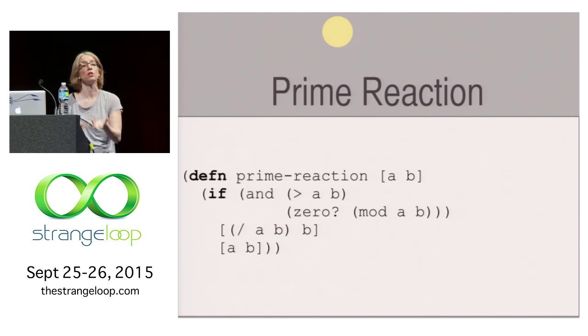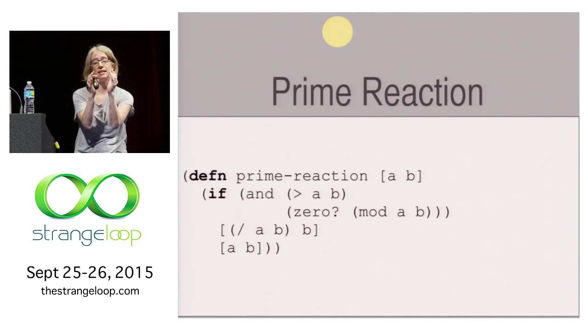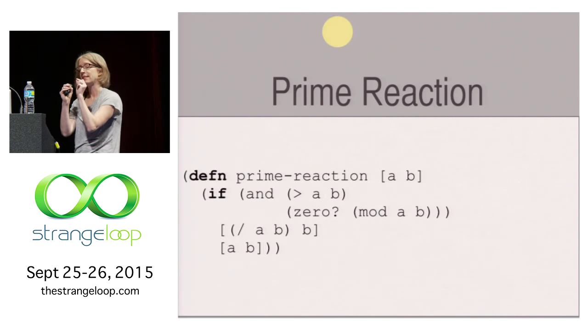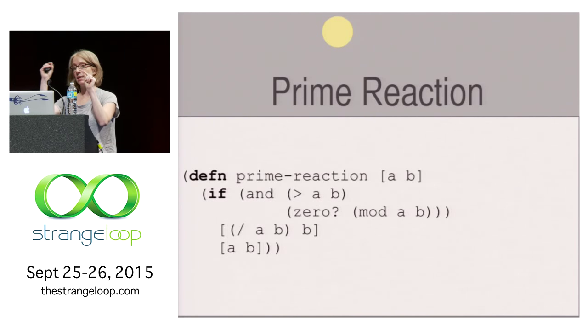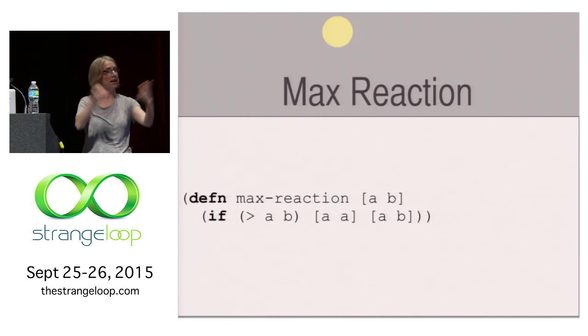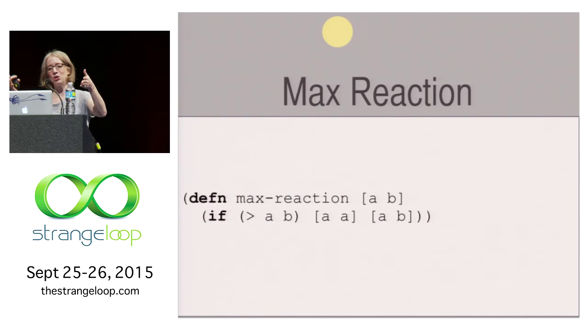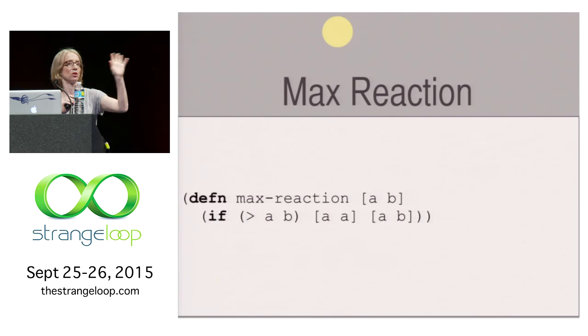So what does this look like in code? This looks almost exactly like the other code, but it's now embodied in that molecule. We have the primary action that's now taking an arity of two, an A and a B, and it's doing the same sort of logic. If A is greater than B, and if it's a zero, then return A divided by B and B, otherwise return the molecules unreacted. The max reaction, it looks even better because it's shorter, but you get taken two arities, and then A and B, and then if A is greater than B, you return two A's, otherwise again the unchanged A and B.